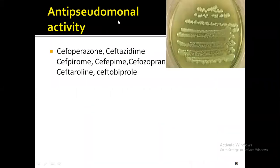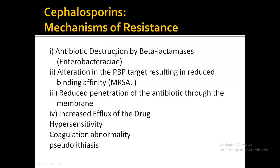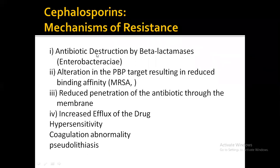There can be short answer questions about which drugs are active against Pseudomonas. The cephalosporins with anti-pseudomonal activity are: cefoperazone, ceftazidime, cefpirome, cefepime, cefozopran, ceftaroline, and ceftobiprole. The mechanisms of resistance to cephalosporins include: antibiotic destruction by beta-lactamases, alteration in the penicillin binding target resulting in reduced binding affinity, reduced penetration of the antibiotic through the membrane, increased efflux of the drug, hypersensitivity reaction, coagulation abnormalities, and pseudomembranous colitis.